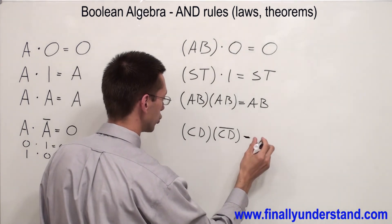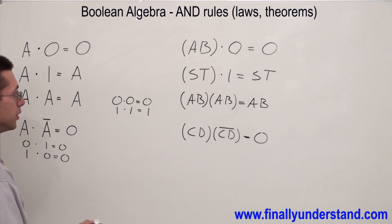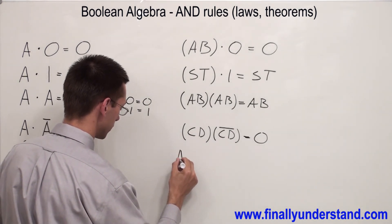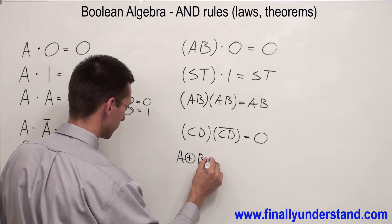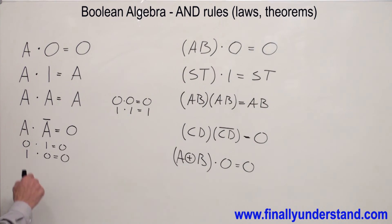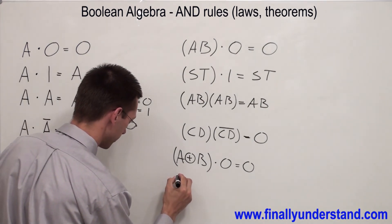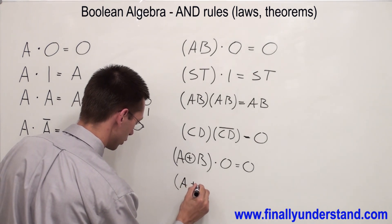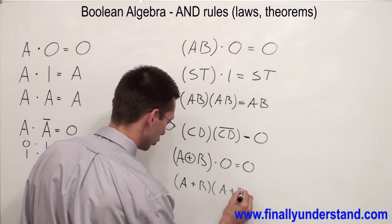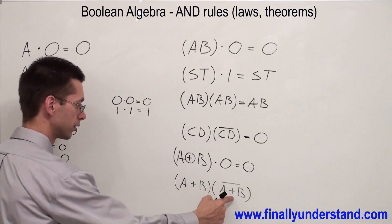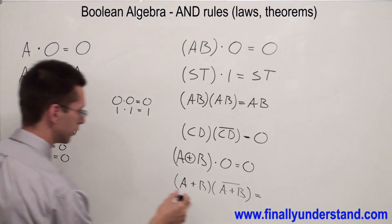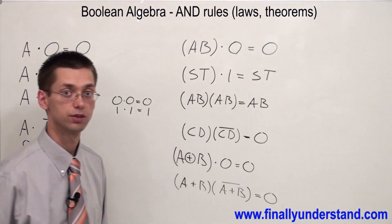If you apply these properties to any other gates, the answer is going to be exactly the same. For example, if I have A·B (OR gate output) times the complement (NOR gate output) — the OR gate is the complement to the NOR gate. So anytime I multiply complements, my answer is equal to zero. This is the AND rule.